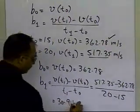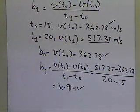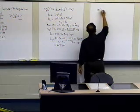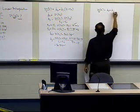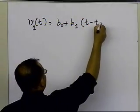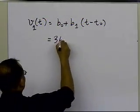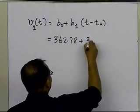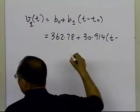With b₀ and b₁ known, we can write the first-order polynomial: V₁(t) = b₀ + b₁(t - t₀) = 362.78 + 30.914(t - 15).